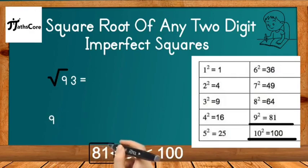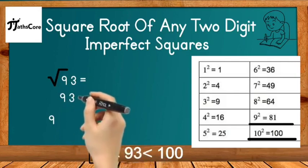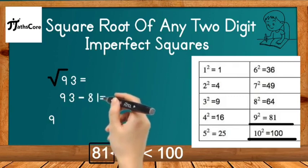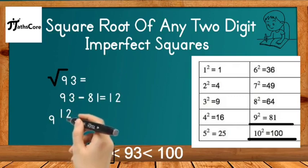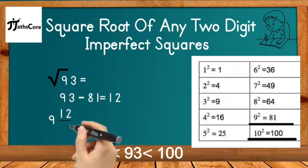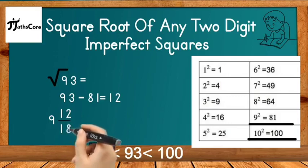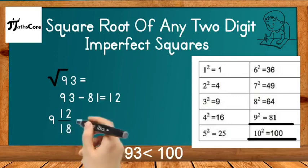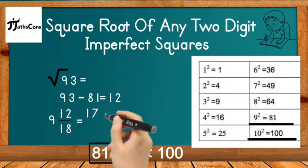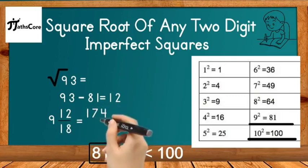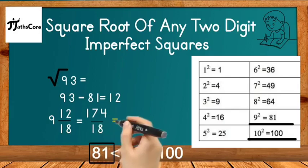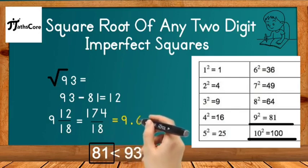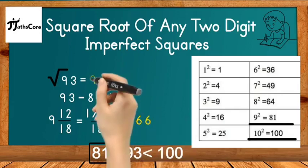Subtract 81 from 93: 93 − 81 = 12. Write down 12 and divide it by double of 9, which is 18, making a mixed fraction: 9 and 12/18. Simplify: this equals 174 ÷ 18 = 9.66. The square root of 93 is 9.66.